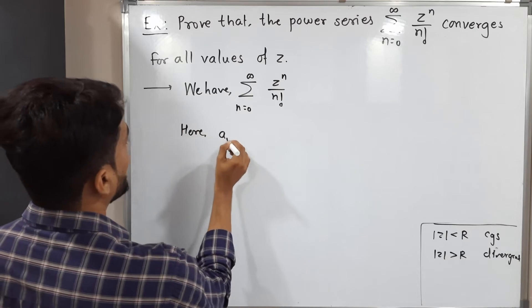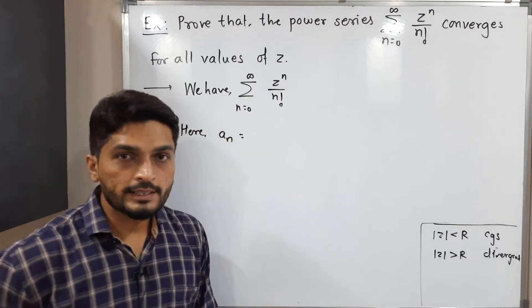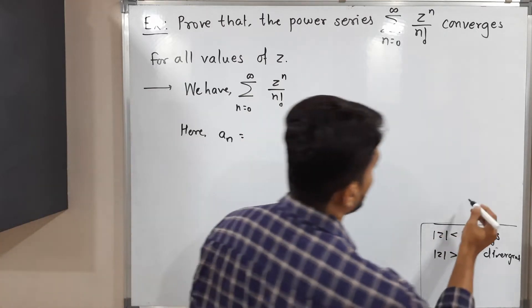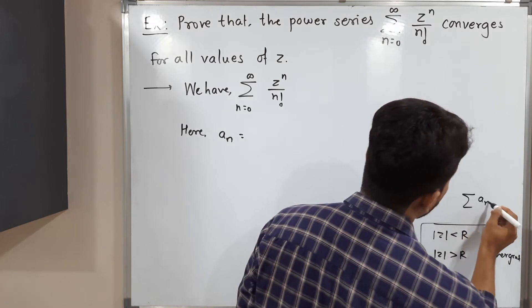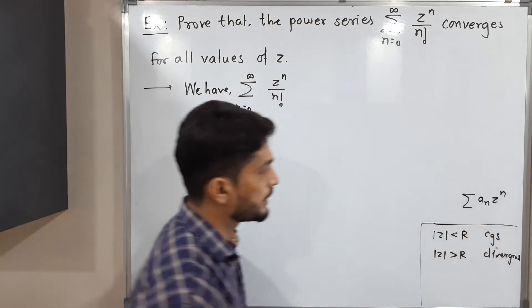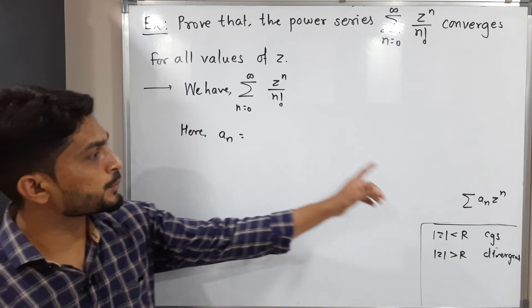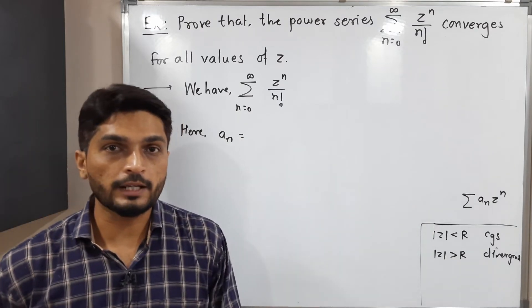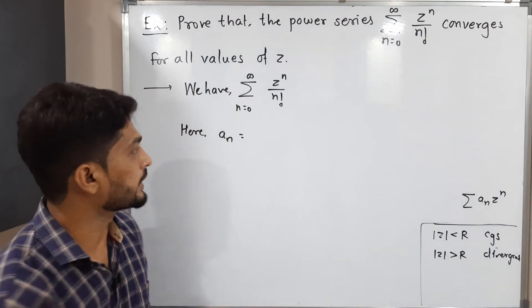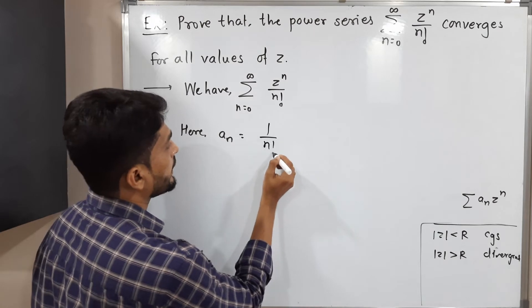Here let us find a_n first. You know that the standard form of power series about z equals 0 is a_n z raised to n. If you compare the given series with this one, you can easily see our a_n is 1 upon n factorial.